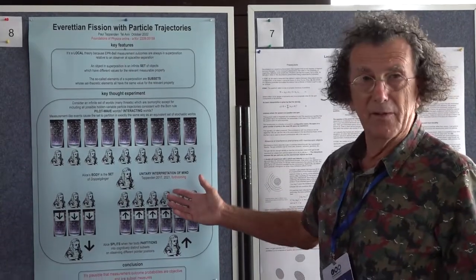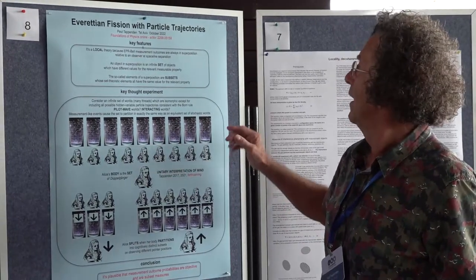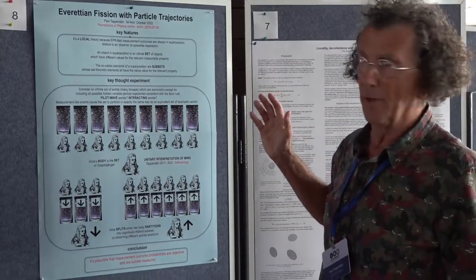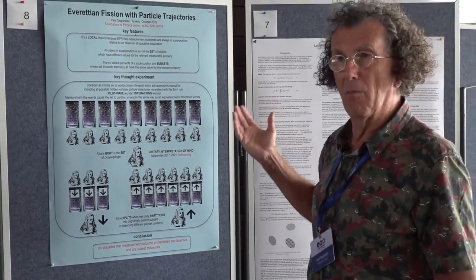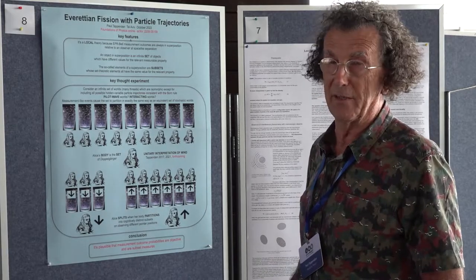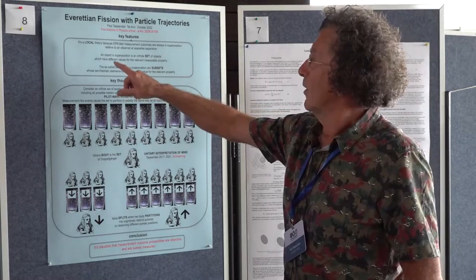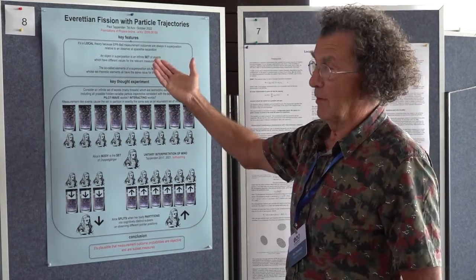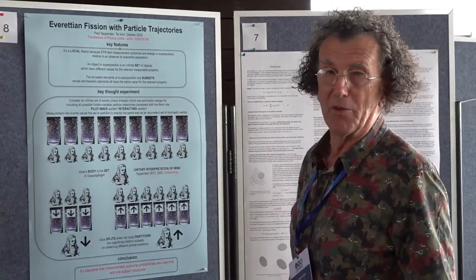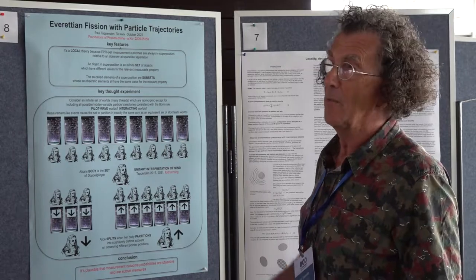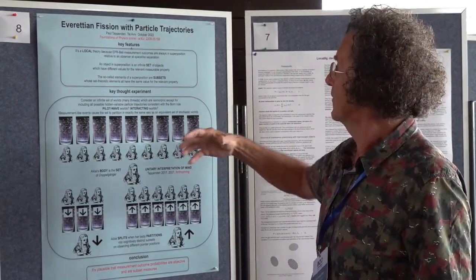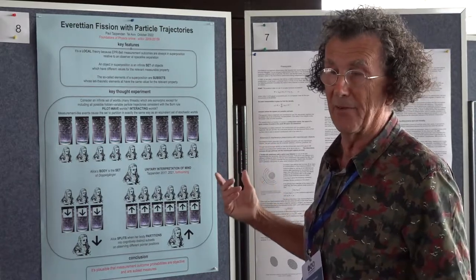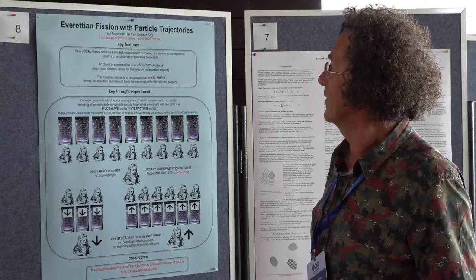In order to get this interpretation to work, I have to use set theory in such a way that you can understand objects which have an indefinite state as being sets of objects in definite states. In quantum theory, a superposition can be interpreted as an infinite set of objects which are all in definite states but which have subsets in different definite states. The object which is the set of all of them is in an indefinite state, because to be in a definite state the set has to have all its elements in the same state.